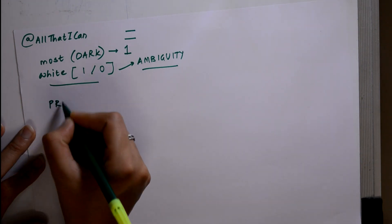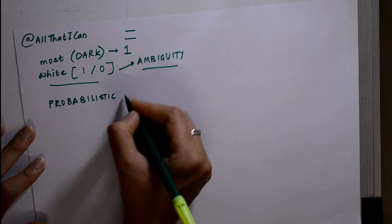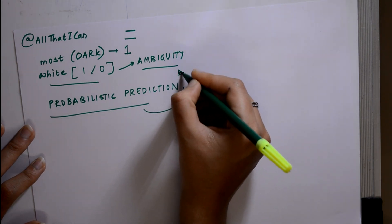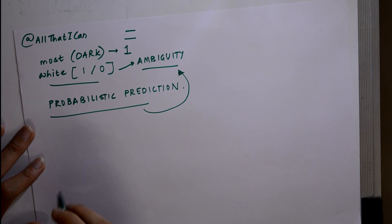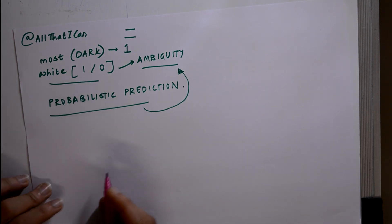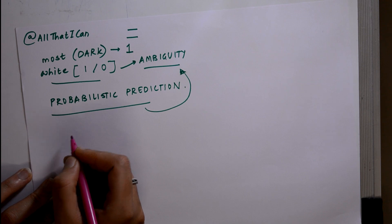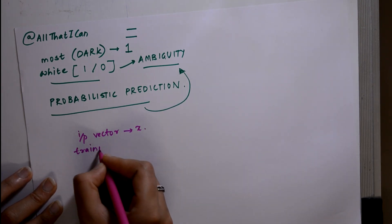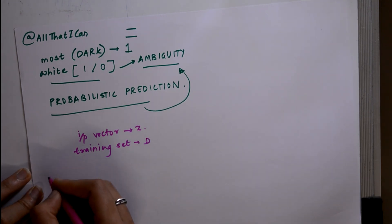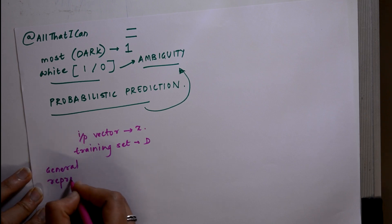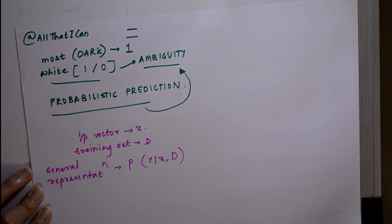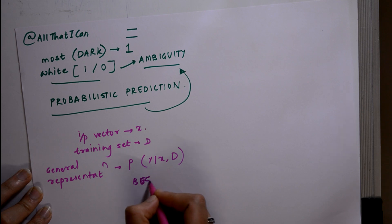This is where probabilistic prediction is used. We need to use probability for this purpose to handle our ambiguity. Denoting the probability distribution over possible labels is the way out for this. We will be having input vector variable x and training set d. The general representation for probability is given as probability of y given x for a given training set d. With this probabilistic output, we can always compute best guess.